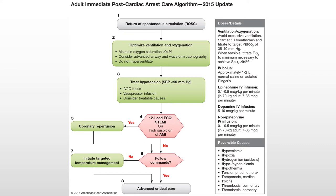If they're able to follow commands, then we have good brain function and we don't need to cool them off. They'll also go to the ICU. For ventilation and oxygenation, we want to avoid excessive ventilation and titrate for a target end-tidal CO2 of 35 to 40 millimeters of mercury — if we have the ability to do end-tidal CO2 monitoring. We also want to titrate the FiO2 to achieve an SpO2 of at least 94%.